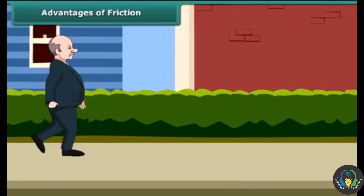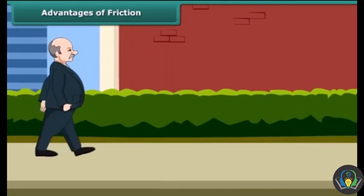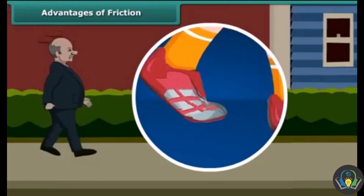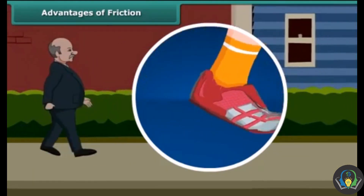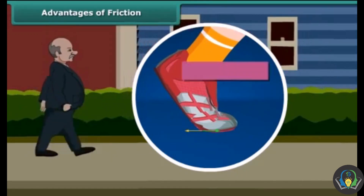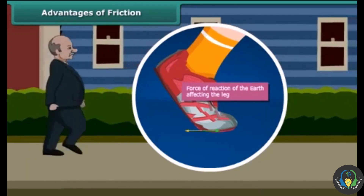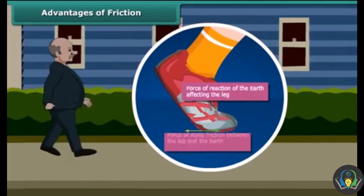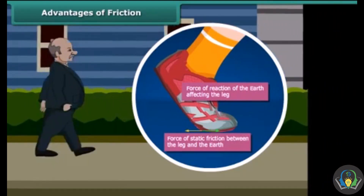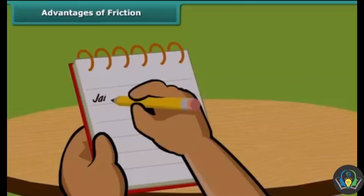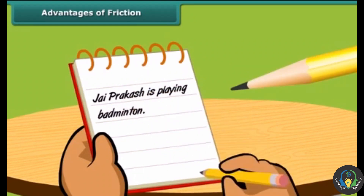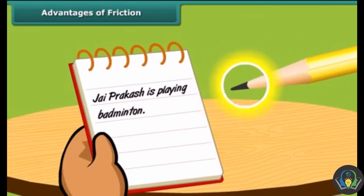Friction is both good and bad. We are able to walk because friction prevents us from slipping. When we push the ground with our foot, friction provides a forward reaction to the push and pushes us forward.